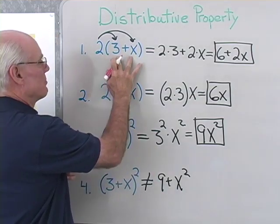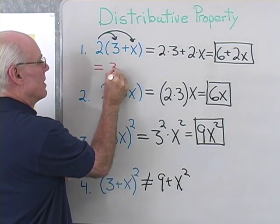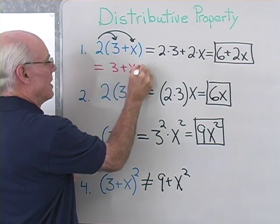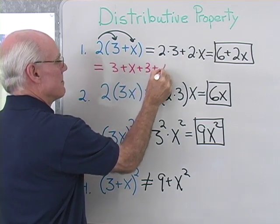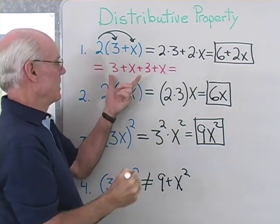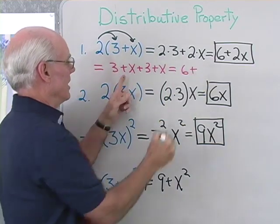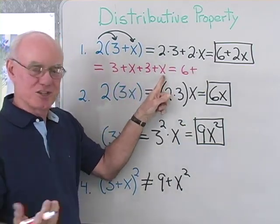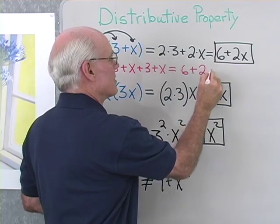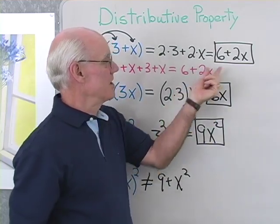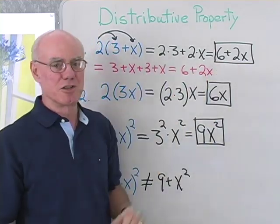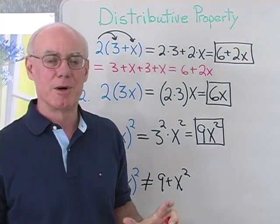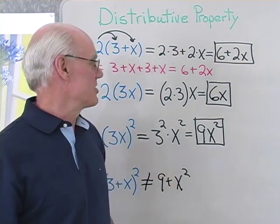So 2 times 3 plus X means 3 plus X plus 3 plus X. I could simply add 3 and 3 and get 6, and then 1X plus another X is 2X. So when I do that, I get the same result as with applying the distributive property.